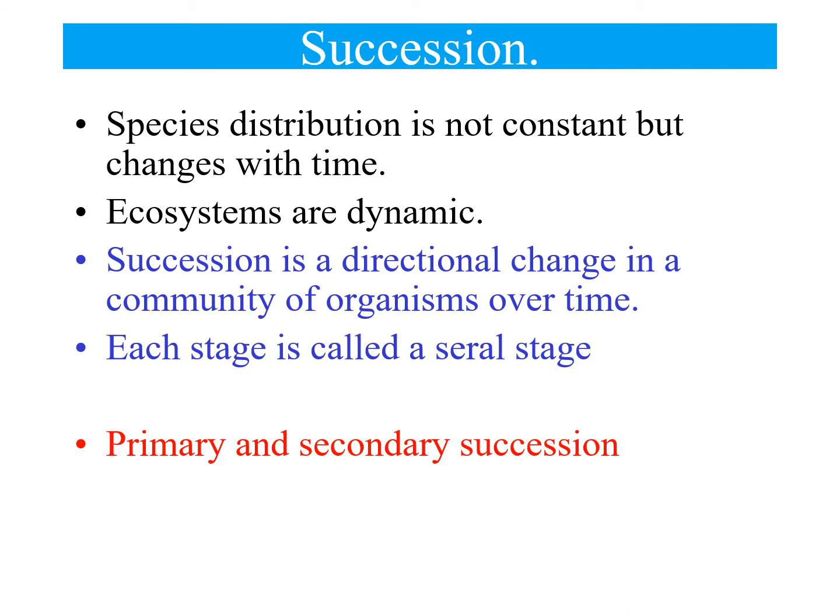The key thing with succession is making sure you actually understand it. The idea is that ecosystems are dynamic — they're constantly changing. Succession is a process where the ecosystem changes over time in a particular direction. We talk about different stages of succession; each stage is called a seral stage. The population changes and biotic factors are affected by abiotic factors, and these are intertwined, affecting the changing population as time goes on.